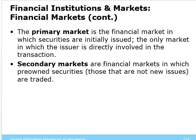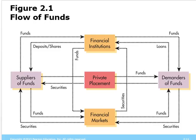In financial markets, the primary market is when the security is first born — when an IPO or bond is first created and sold. Then when it's resold from one investor to another, it's in the secondary market.